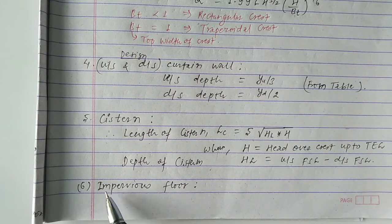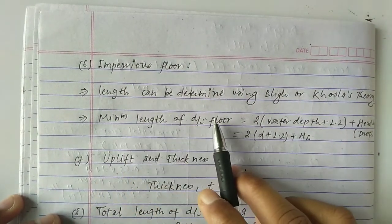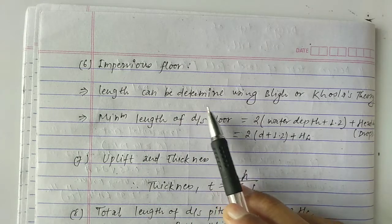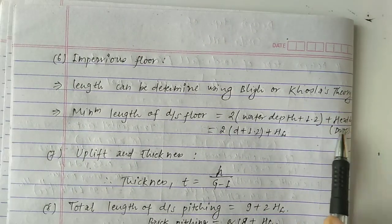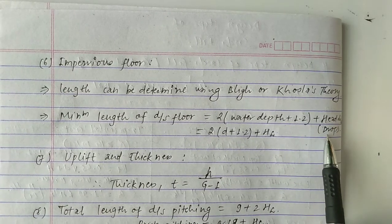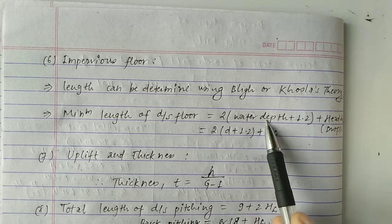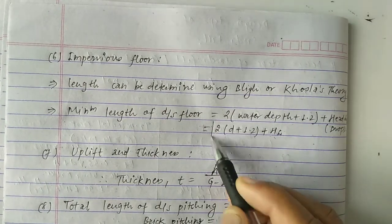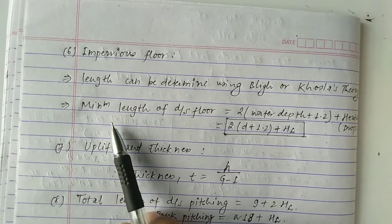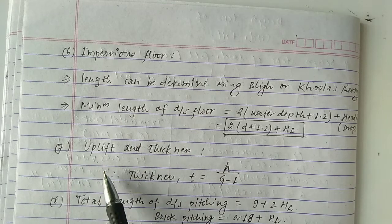Step 6 is the design of the impervious floor — specifically, determining the length and thickness of the floor. This is determined using Bligh's or Khosla's theory. The minimum length of the downstream floor equals 2 × water depth (d) + 1.2 × HL, where HL is the head difference (drop).